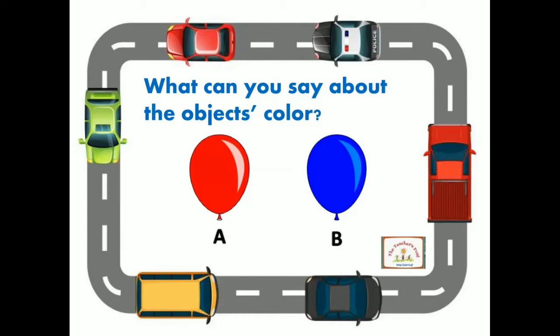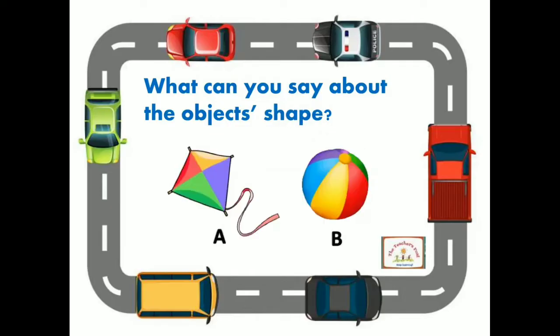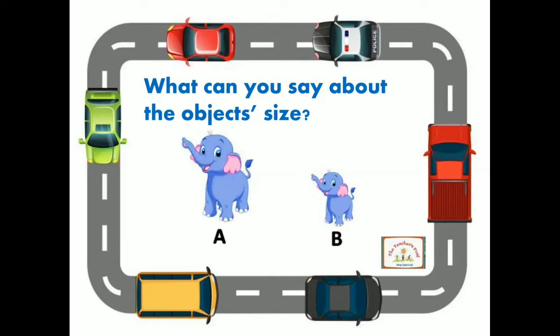What can you say about the object's color? Balloon A is color red and Balloon B is color blue. What can you say about the object's shape? The kite's shape is diamond while the ball's shape is circle. What can you say about the object's size? Elephant A is big and Elephant B is small.